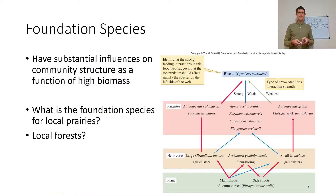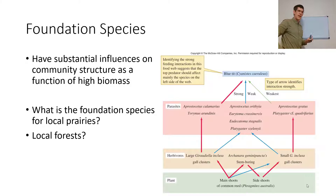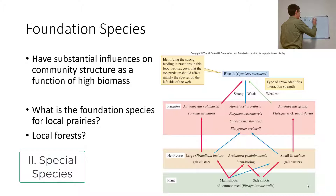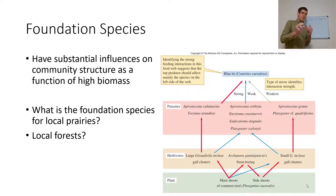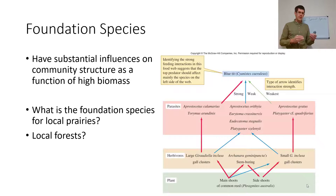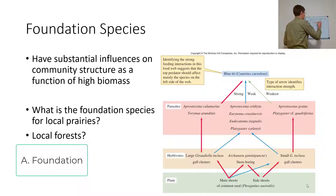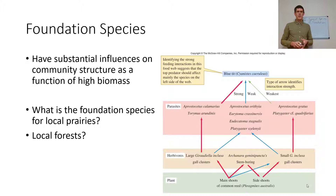A lot of different effects are going on in any given community at any given time, and there are certain species that have higher impacts than others. When we're talking about a species that's going to have a greater number of impacts on others, we get into these special examples. Foundation species, environmental engineers, and keystone species have many more interactions than other species in their ecosystems. Foundation species are going to have substantial impacts because they have so much biomass.